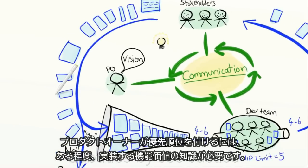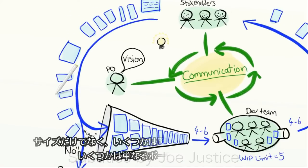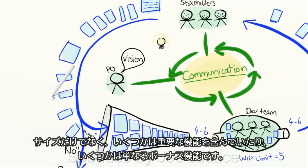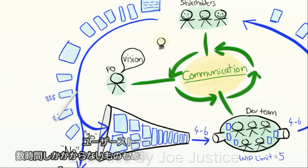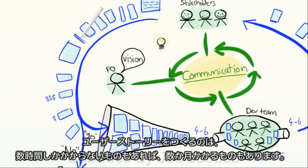To be able to prioritize, the product owner must have some idea of the value of each story as well as the size. Some stories are critically important and others are just bonus features. Some stories take just a few hours to build, and others take months.